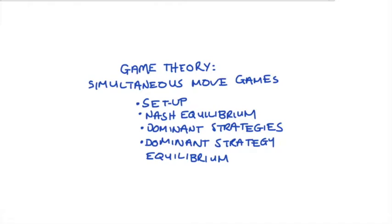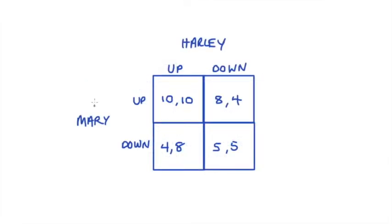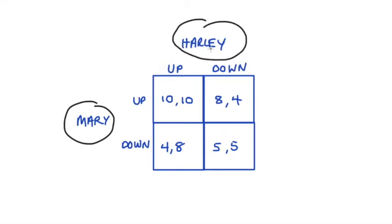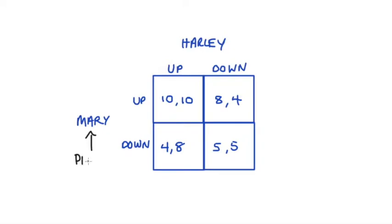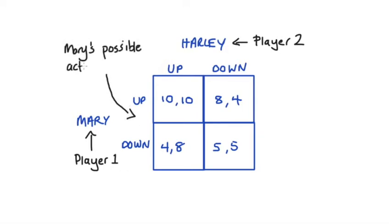In the video I'm going to go through this example here, so let's start by explaining the setup of the table. In this game we have two players, Mary and Harley. We say that the player to the left of the table is in the spot of player one and the player above the table is in the spot of player two. The number of rows in the table corresponds to the number of possible actions that Mary, or player one, can take.